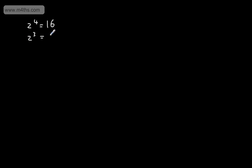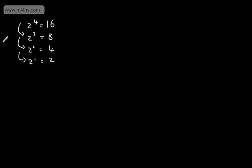Let's start off with 2 to the power of 4, which is 16. Subtracting a power gives me 2 to the power of 3, which is 8. Subtracting another power: 2 to the power of 2 gives 4, and 2 to the power of 1 gives 2. On the left-hand side, we're subtracting 1 from the power each time. On the right-hand side, the answer is dividing by 2 each time — it's dividing by this number here.